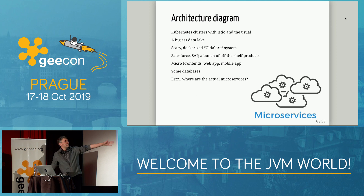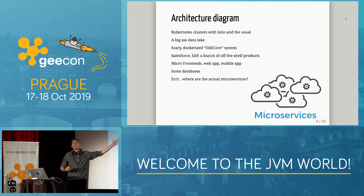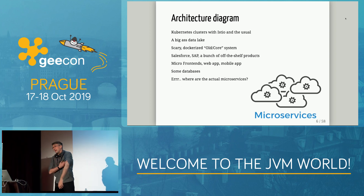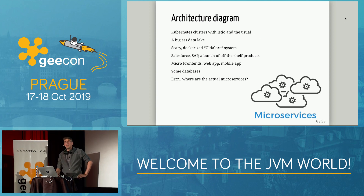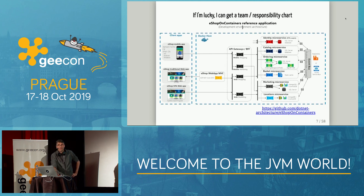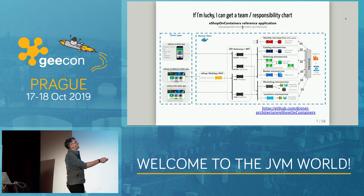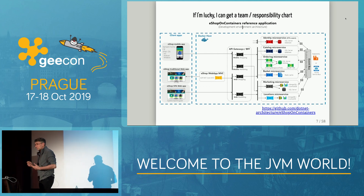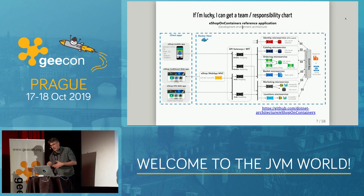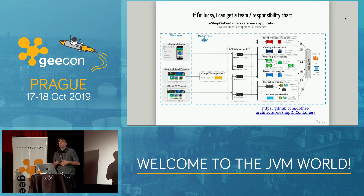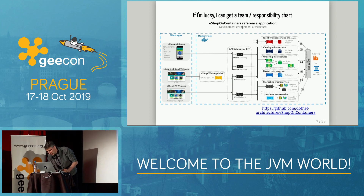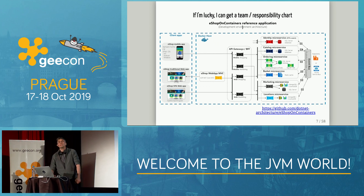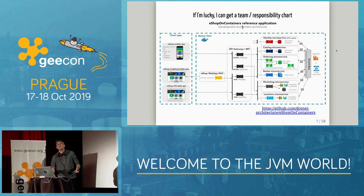When I ask for a diagram of the microservices — how they communicate, what they talk with — there's a problem, because usually I don't get anything. If I'm lucky, I get something like an organization chart, where I can see teams responsible for orders, catalog, basket, and so on. But this diagram isn't very useful, because there's an event bus there and you don't know what messages those teams send.